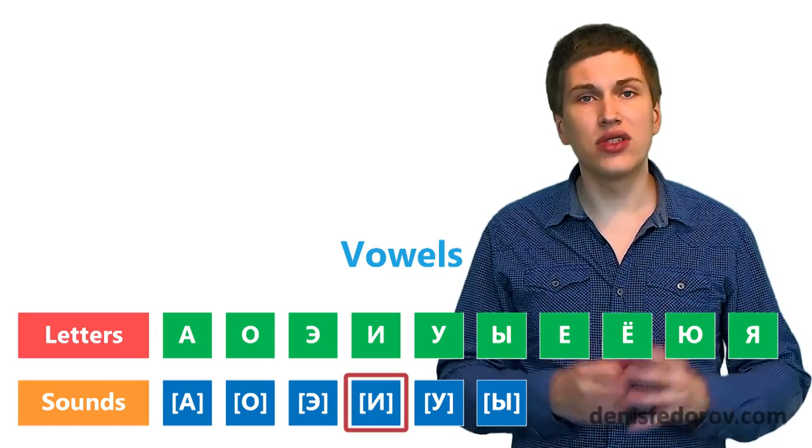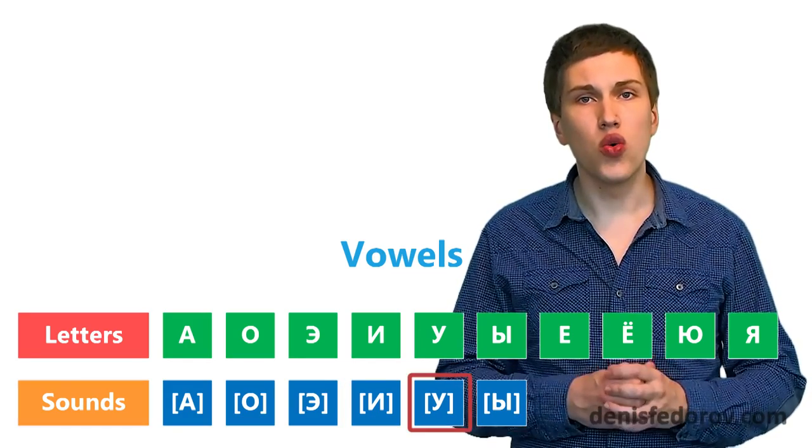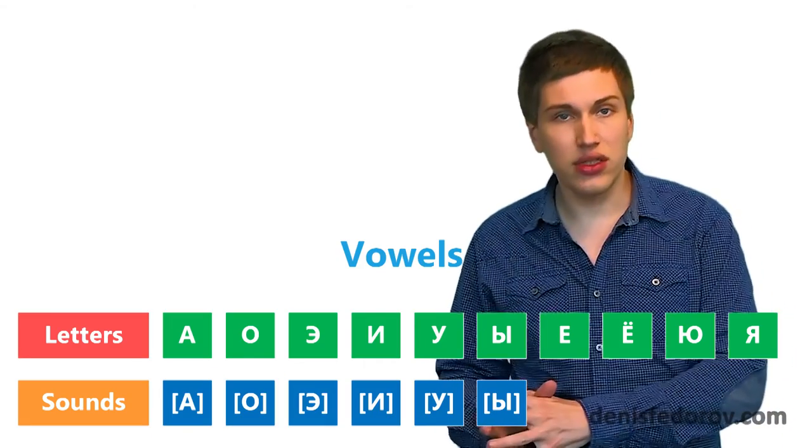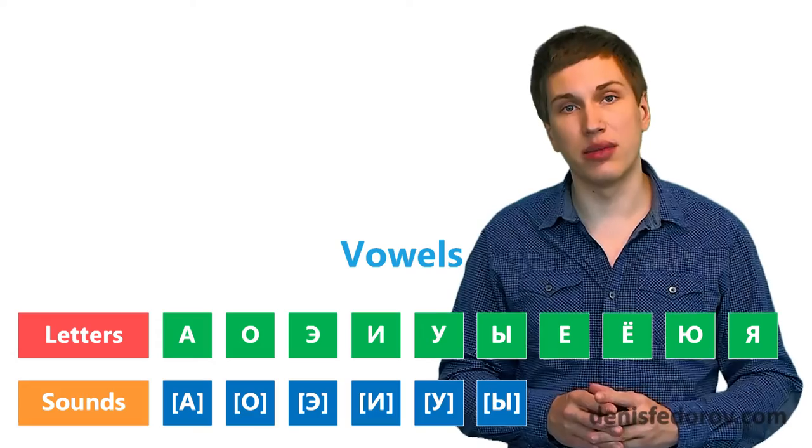The sounds are Ы, И, У, Э, О, А. So some letters have sounds, some not. How is that possible?